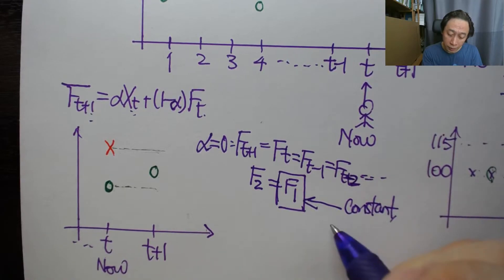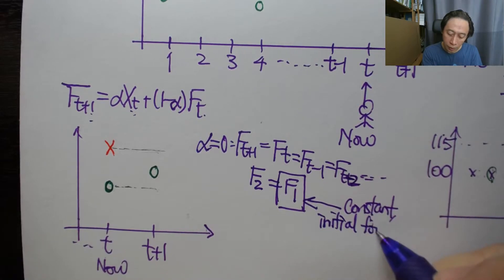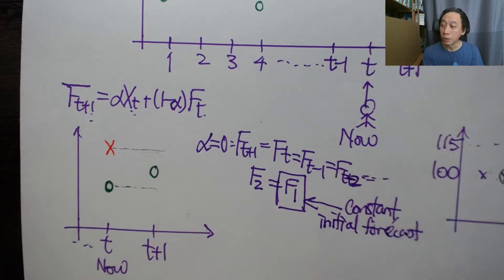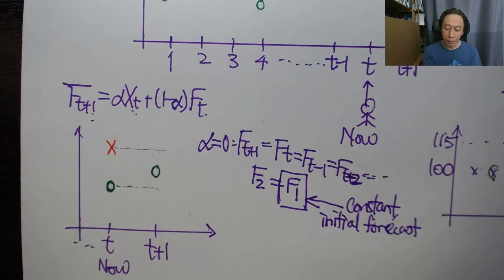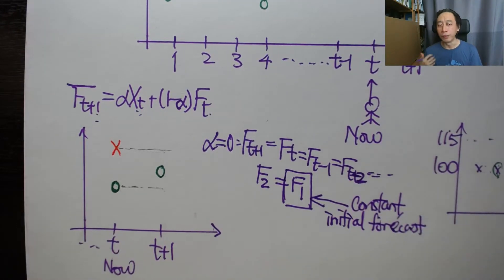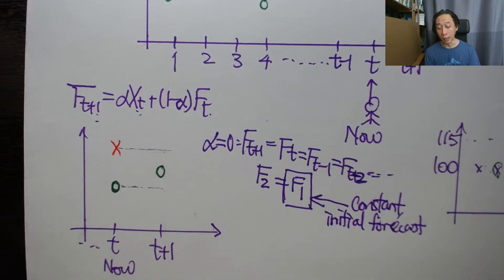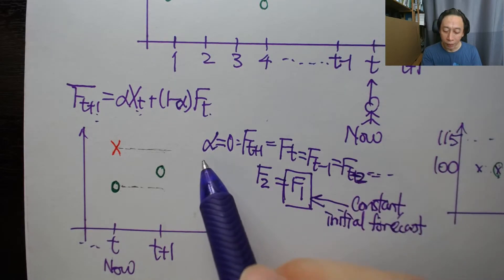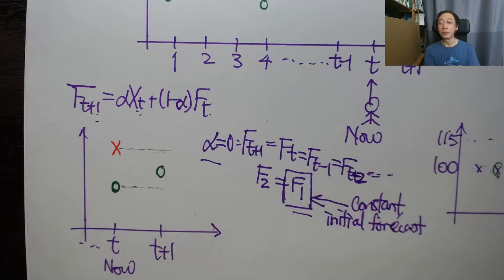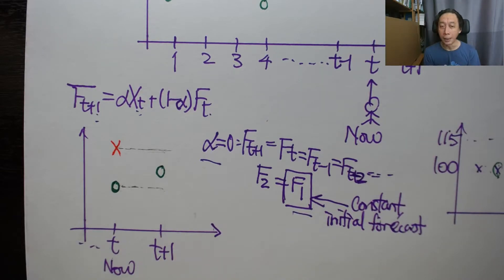That constant is our initial guess — the initial forecast. It is a number we supply. We need to know both alpha and f1 to do exponential smoothing. Alpha must be given and f1 must be given as our two required pieces of information.